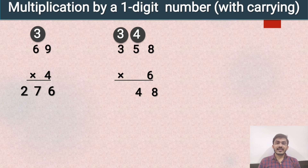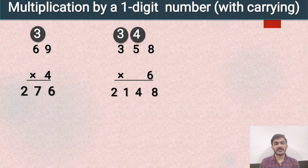Now 6 multiplied by 3. 6 threes are 18. And 18 plus 3 is equal to 21. So the answer will be 2148.